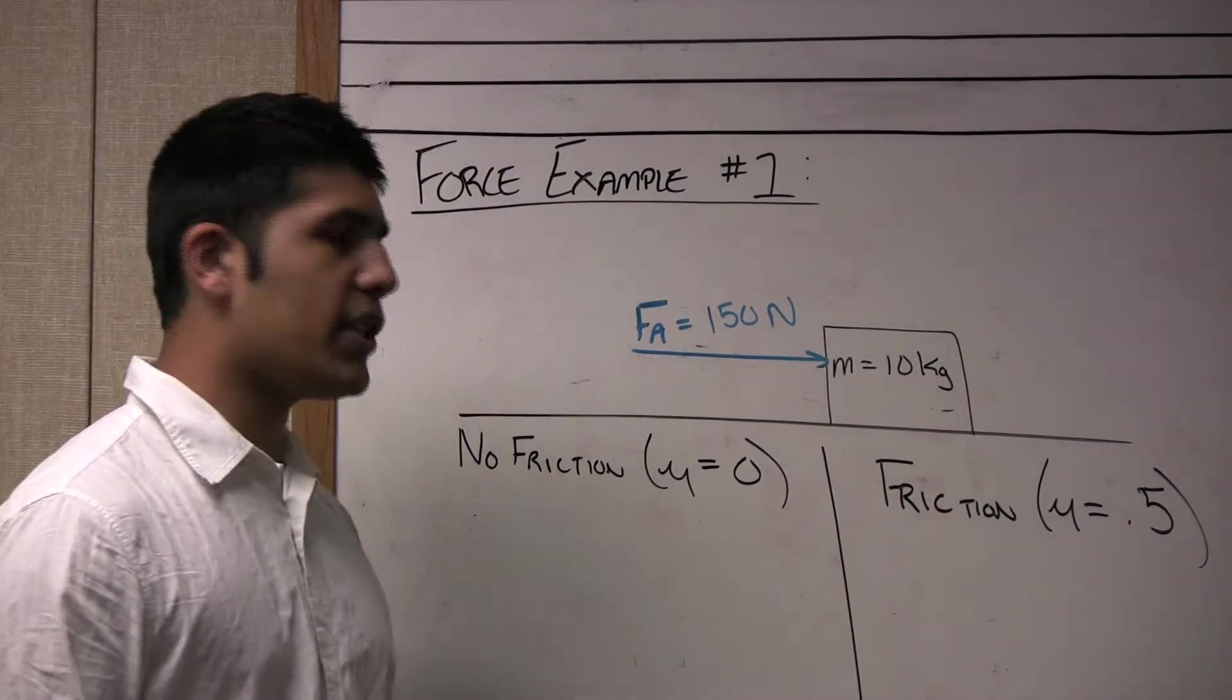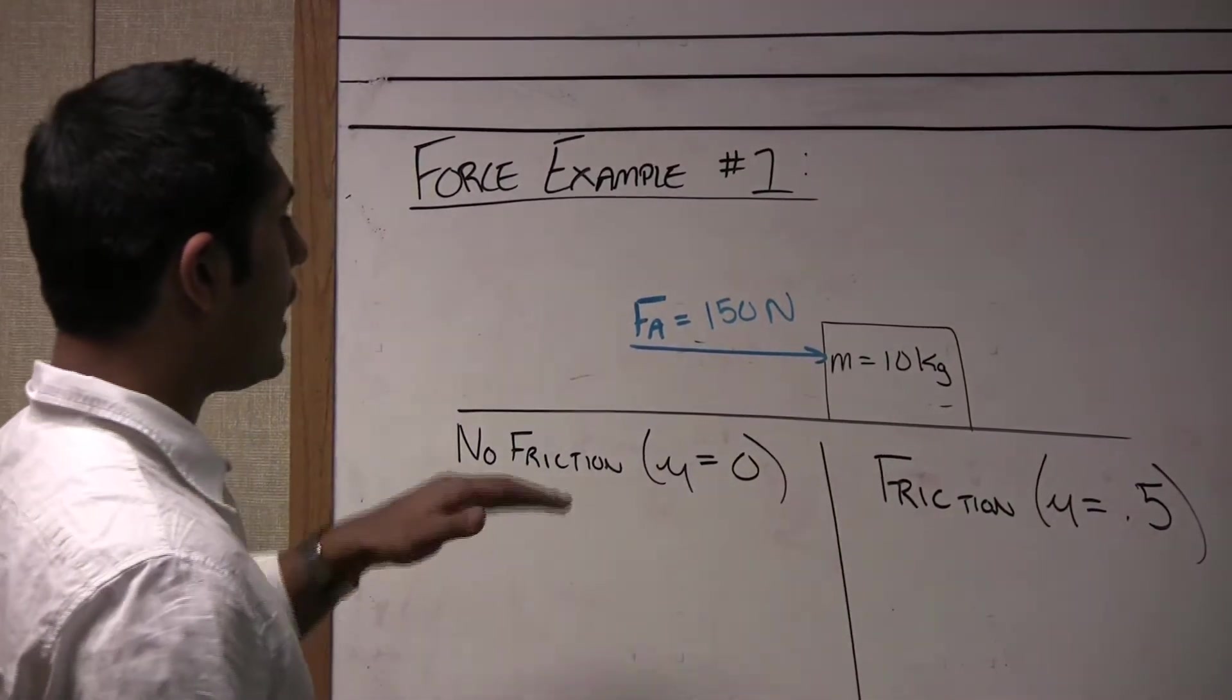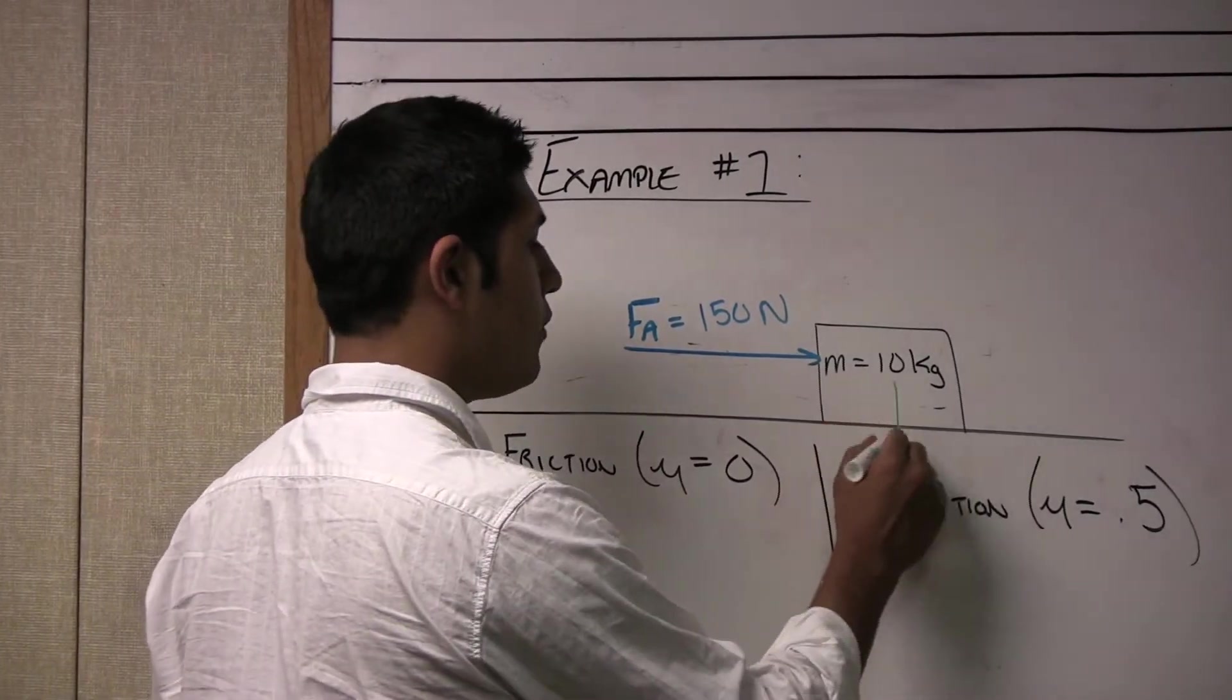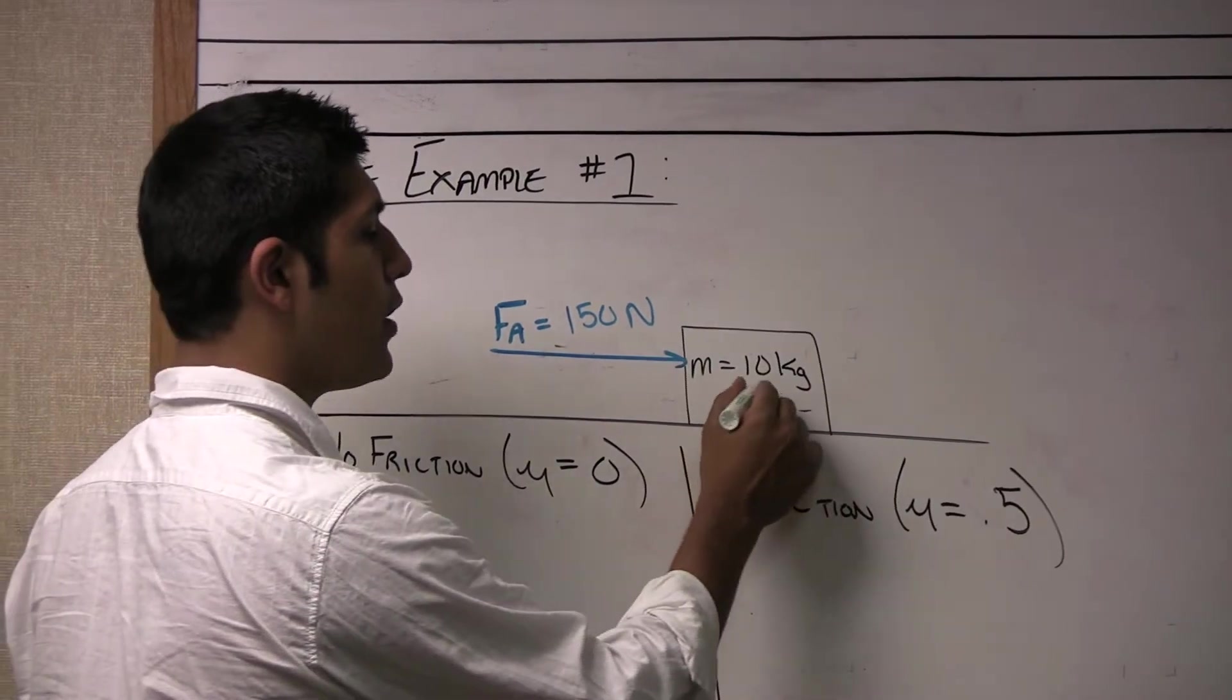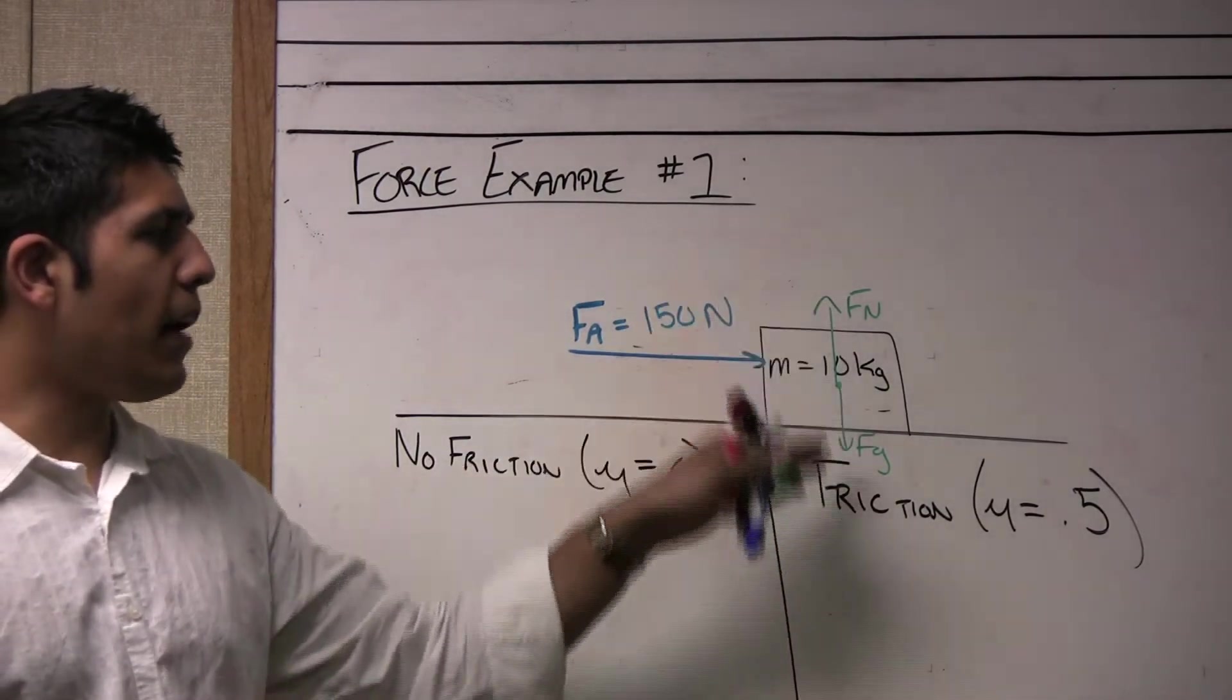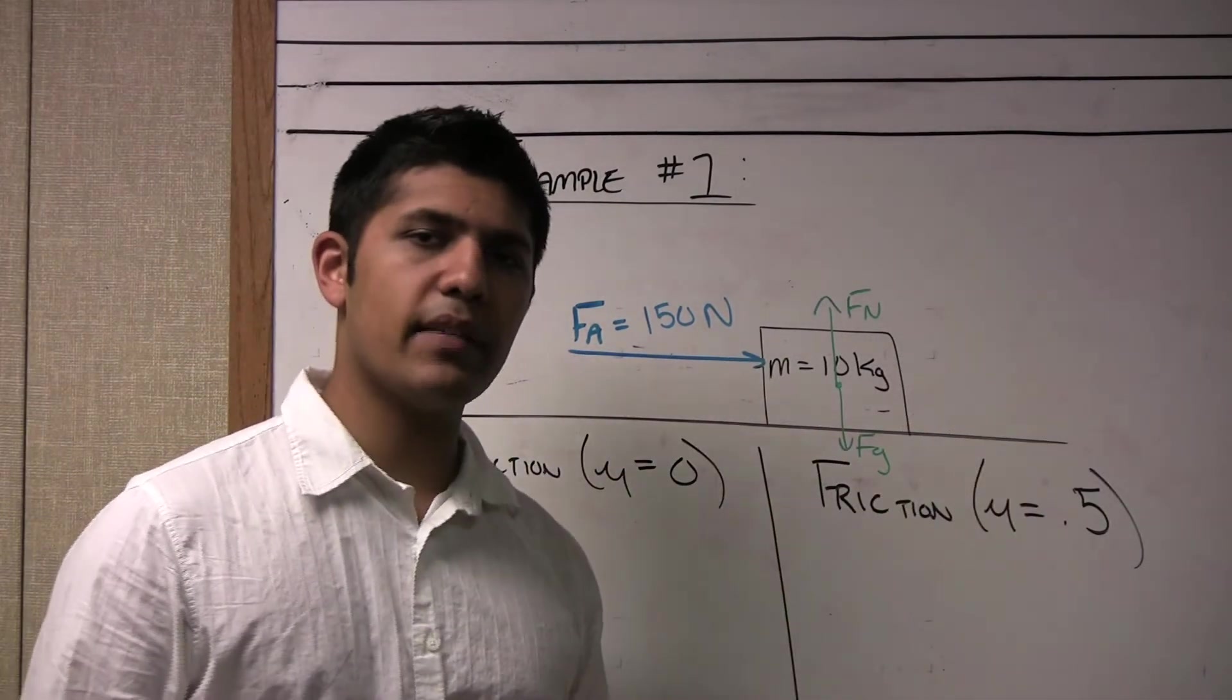Often times the question is what is the acceleration of the object that you are applying the force to. Right now I only have the blue applied force vector acting on it. I should draw the force of gravity vector which is down here and because there is gravity the resultant force of the normal force is going to be upwards. However, the first case is going to be without friction so we do not really worry about forces in the y axis here. The acceleration is only going to happen in the positive x direction.